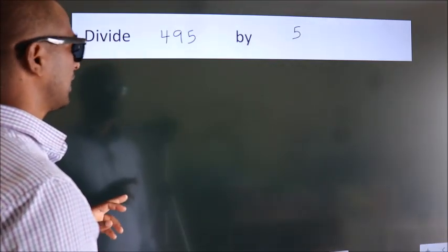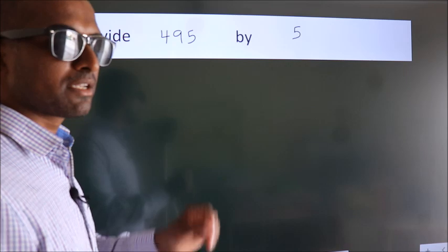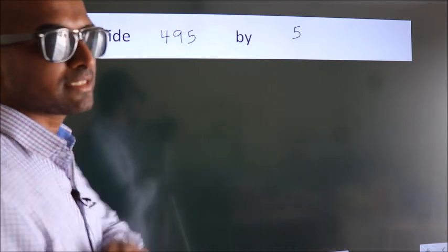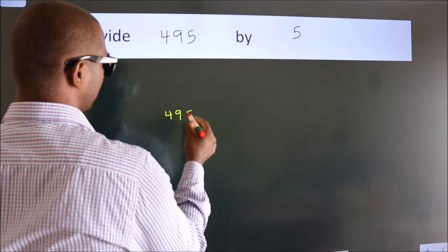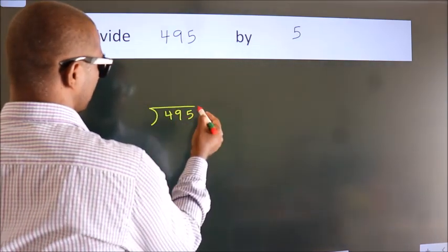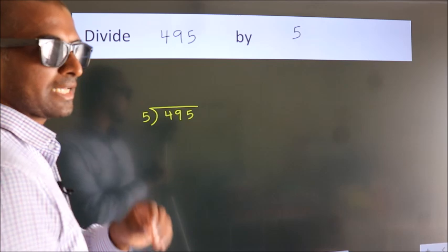Divide 495 by 5. To do this division, we should frame it in this way. 495 here, 5 here. This is your step 1.